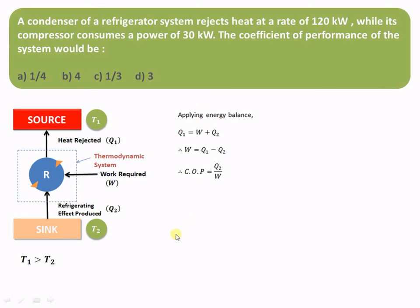The block diagram of the refrigerator system shows that we want to pump heat from the low temperature sink and transfer the heat to the high temperature source, and therefore we will require some amount of work. Considering this refrigerator as a thermodynamic system, we can apply the energy balance equation. The incoming arrows to the system are Q2 and W — that is the refrigerating effect produced and the work.